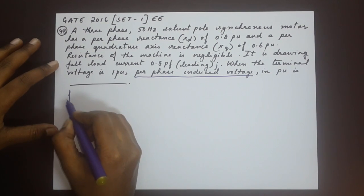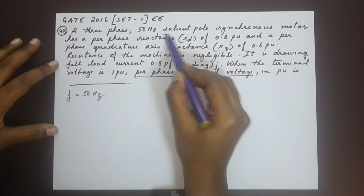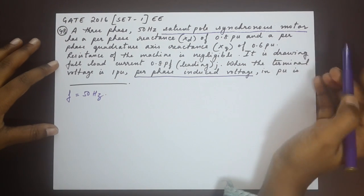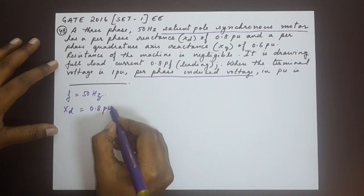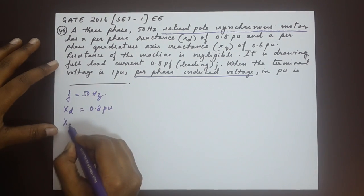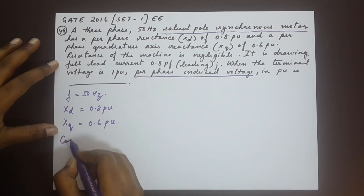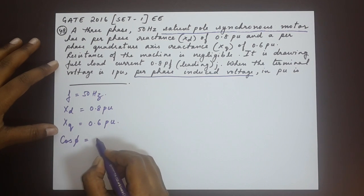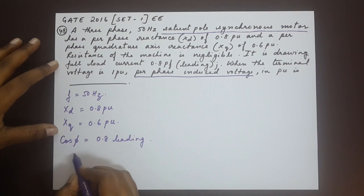So we have been given frequency 50 Hertz, salient pole synchronous motor, XD is 0.8 PU, XQ is 0.6 PU, power factor cos phi is given to us as 0.8 leading and the terminal voltage VT is 1 PU. So this is all that we have.